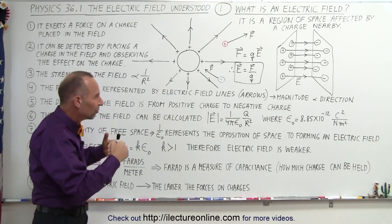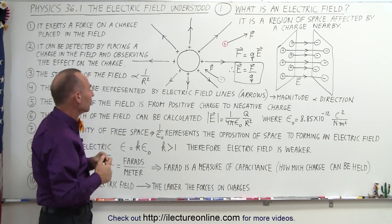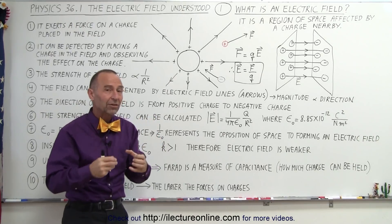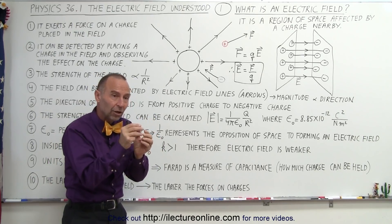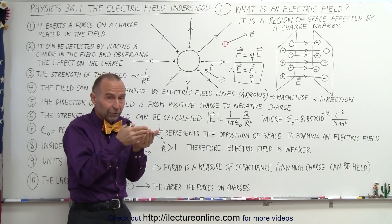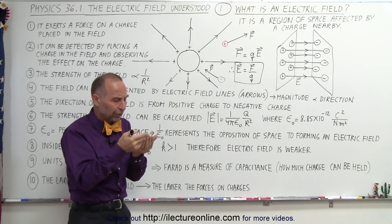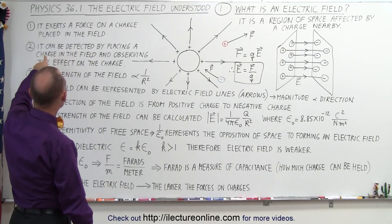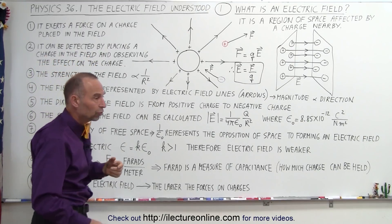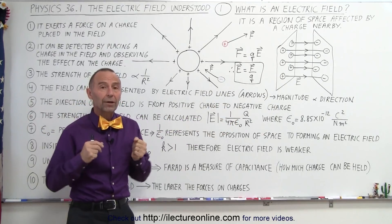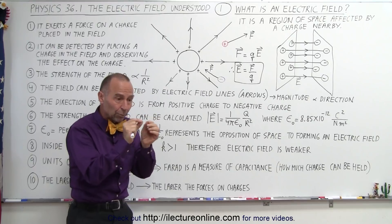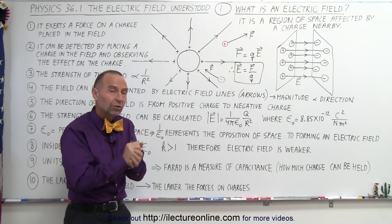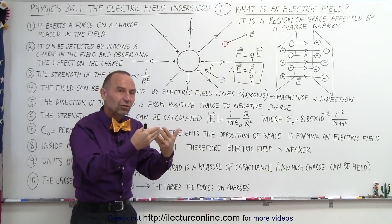Let's read some descriptions to understand what an electric field is. First, it exerts a force on a charge placed in the field. So an electric field is a region in space such that when you put a charge in that space it feels a force — a positive charge will feel a force in the same direction of the field, and a negative charge will feel a force in the opposite direction. It can be detected by placing a charge in the field and observing the effect: the charge experiences a force or accelerates, and that tells you there is an electric field there.